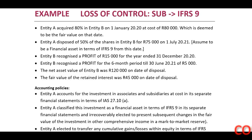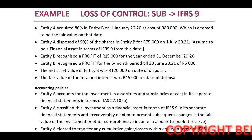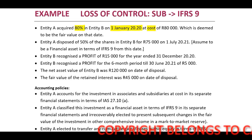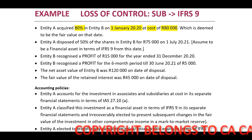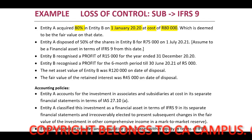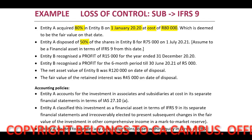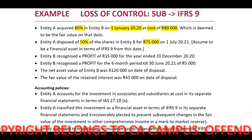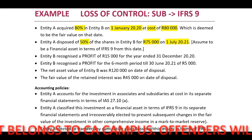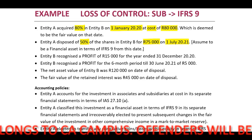In this example, we have a subsidiary that will change into an IFRS 9 investment. Entity A acquired 80% in Entity B on 1 January 2020 at a cost of $80,000, which is deemed to be the fair value on that date. Entity A disposed of 50% of the shares in Entity B for $75,000 on 1 July 2021, assumed to be a financial asset in terms of IFRS 9 from this date.